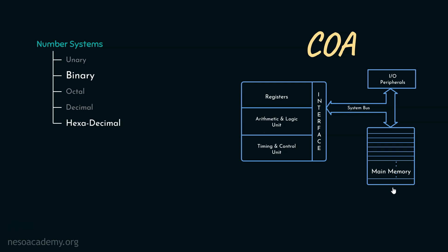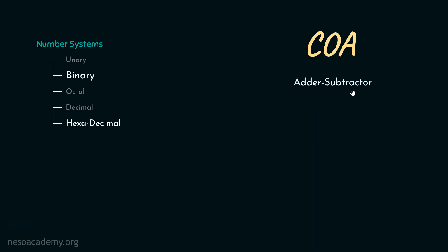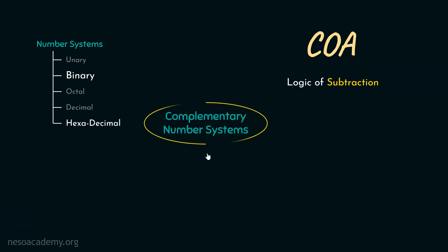We have covered the memory portion. Coming to the CPU, it actually has 4 different segments, and among all these, the arithmetic and logic unit is the unit which helps us with all the calculations. A couple of sessions back, we talked about the 4-bit ripple carry adder, and there we proposed the adder-subtractor circuit — a single circuit which can perform both addition and subtraction. With the ripple carry adder circuit, addition was being taken care of, but the main challenge was subtraction. To implement the subtractor portion, we needed to understand the logic of subtraction, so we first observed the complementary number systems.